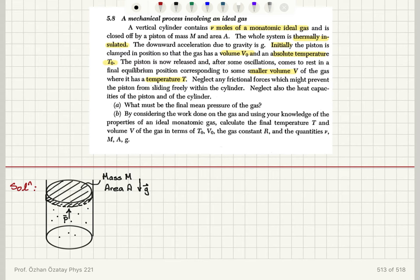Neglect any frictional forces which might prevent the piston from sliding freely within the cylinder. Neglect also the heat capacities of the piston and the cylinder. We are asked: what must be the final mean pressure of the gas? By considering the work done on the gas and using knowledge of the properties of an ideal monatomic gas, calculate the final temperature and final volume.